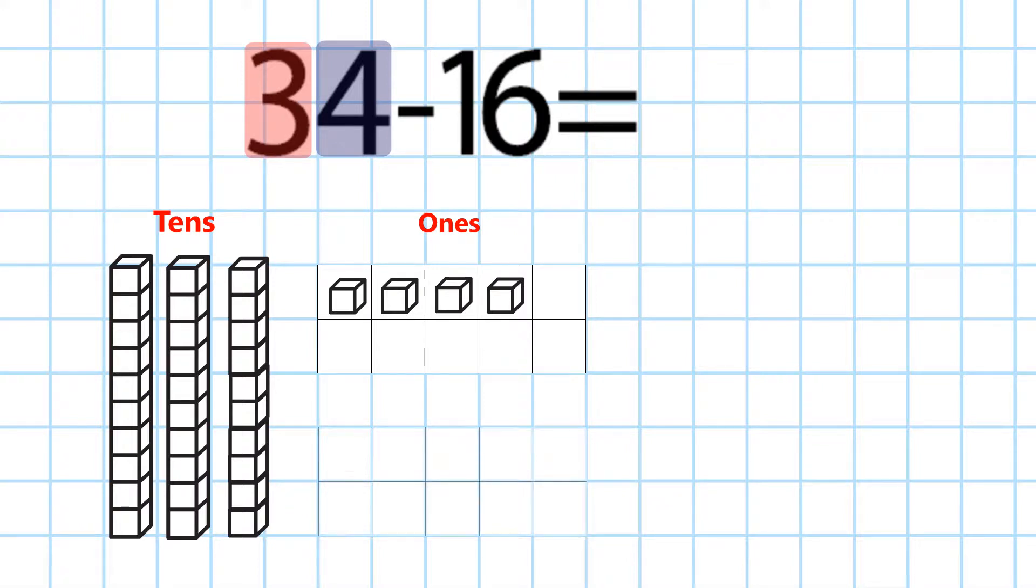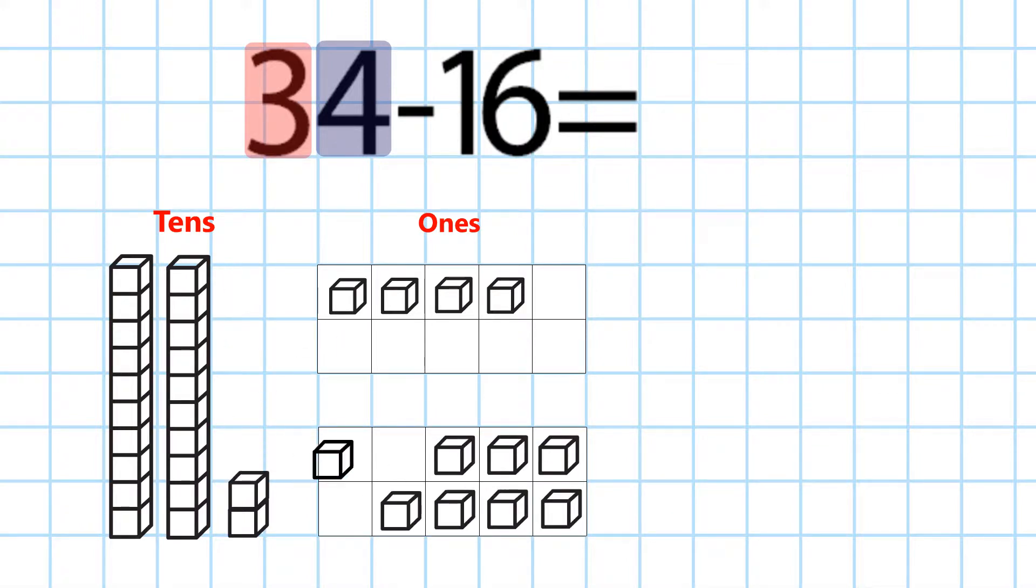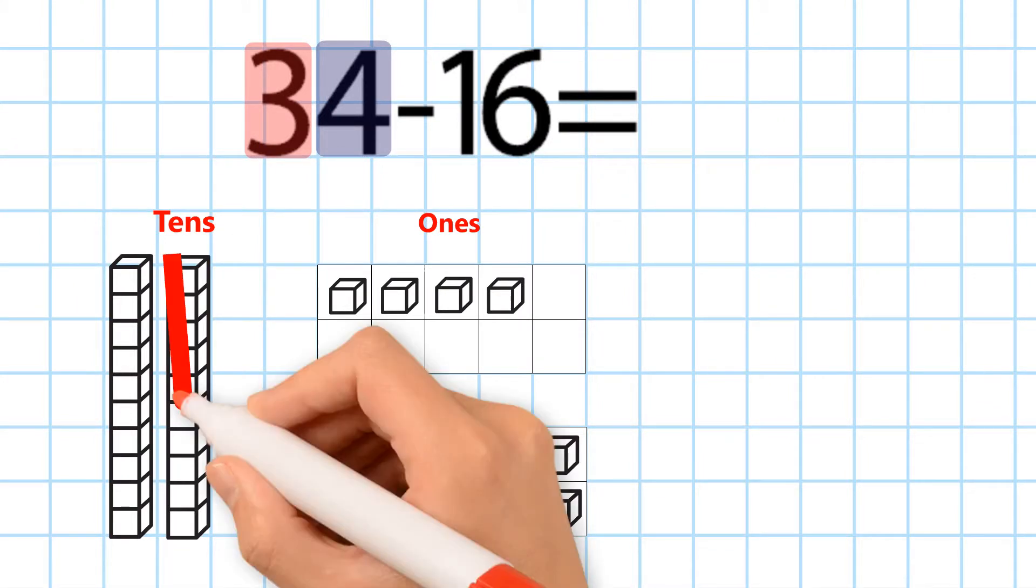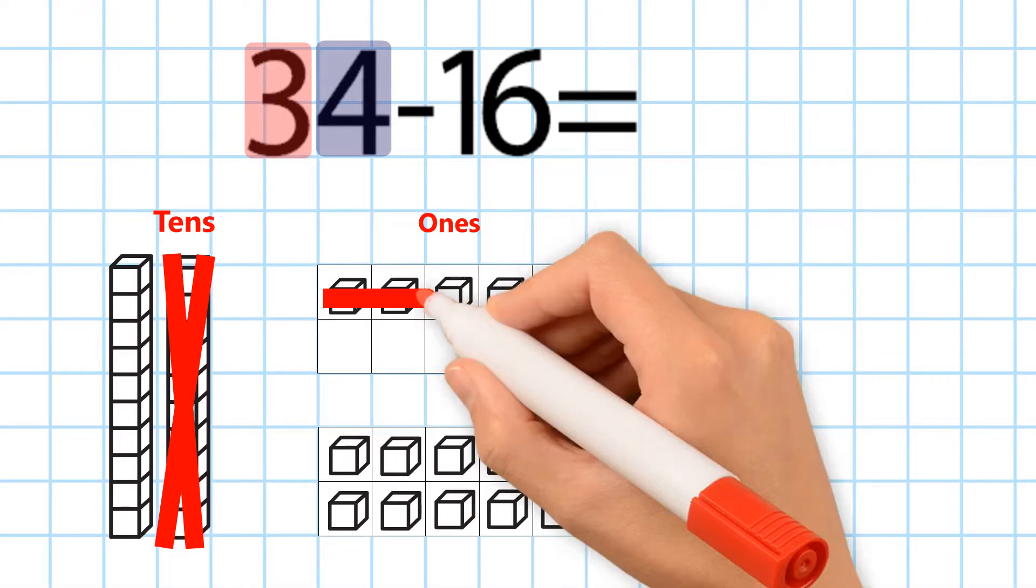You cannot subtract 6 from 4, so we regroup 1 ten into 10 ones. Then we subtract 1 ten from 16 and 6 ones from 16.